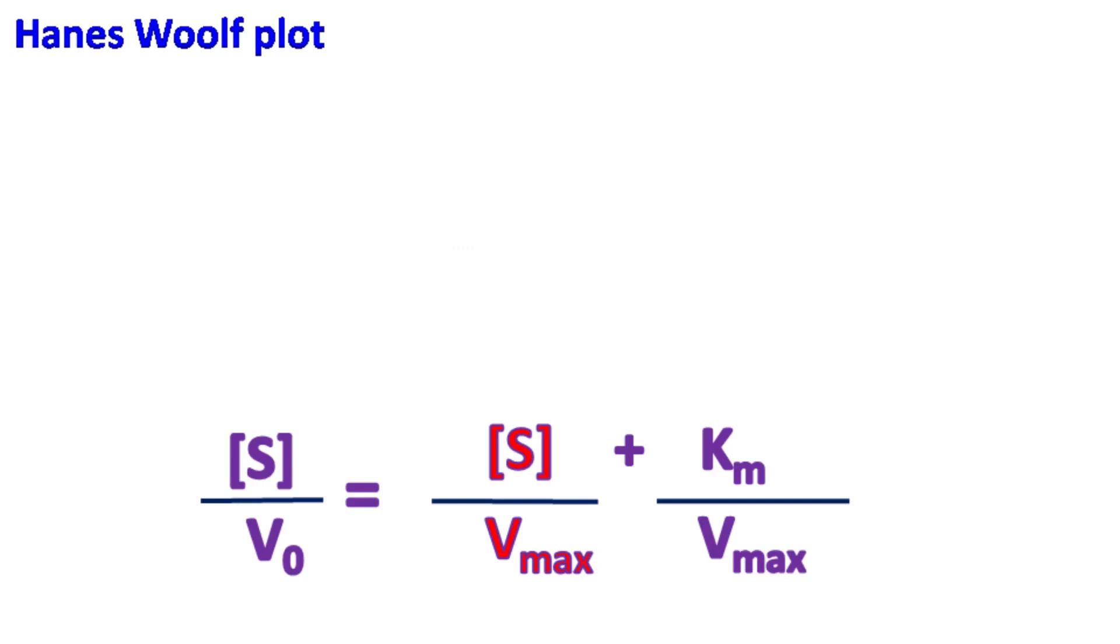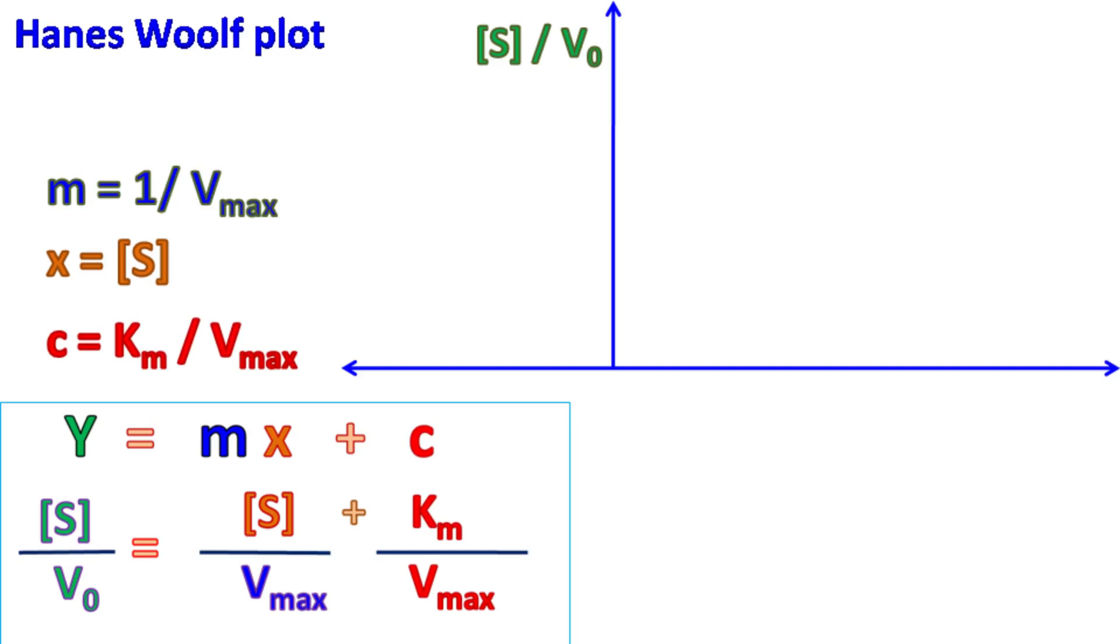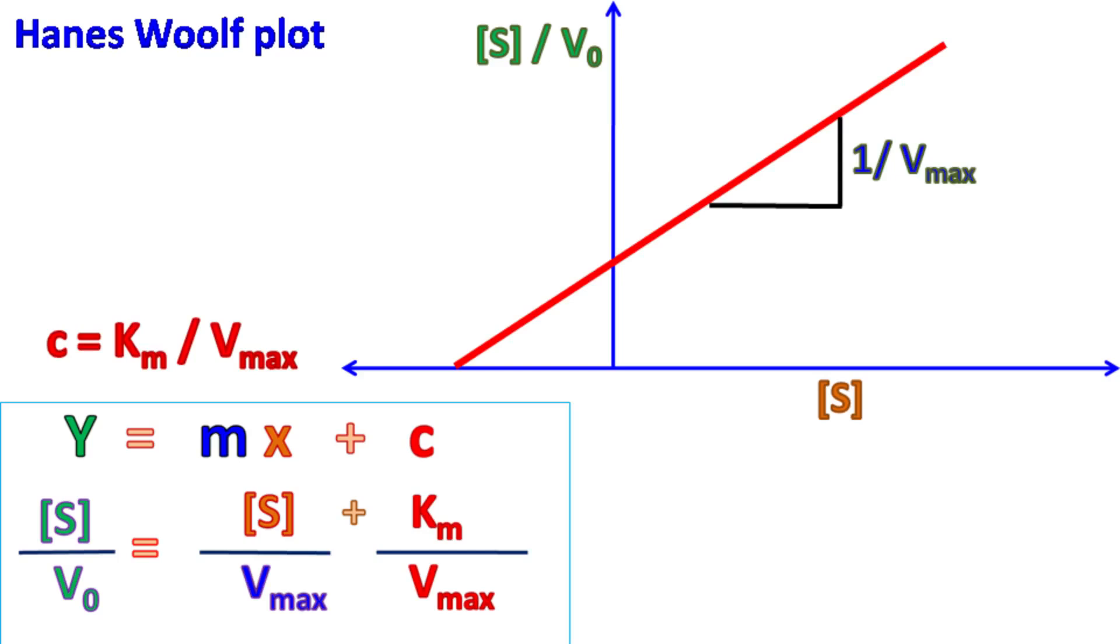This equation is similar to the equation Y is equal to Mx plus C. Here Y will be equal to S by V0. X value will be equal to S. M, which is the slope of the graph, will be equal to 1 by Vmax.